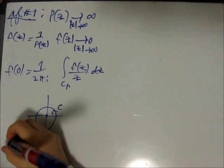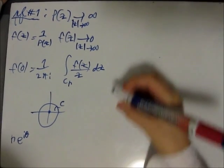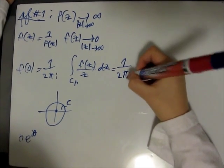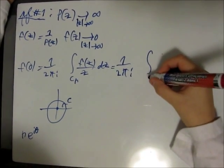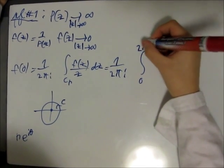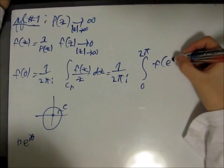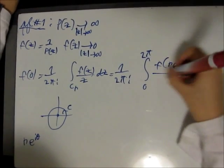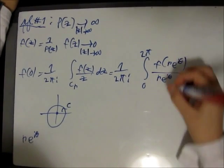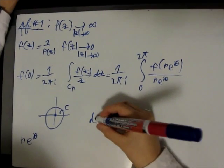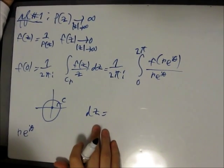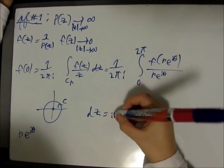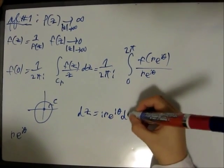We can use the parameterization R times e to the I theta. So, this is 1 over 2 pi I times the integral from 0 to 2 pi of F of R e to the I theta divided by R e to the I theta. The derivative of Z with respect to theta is I R e to the I theta, D theta.